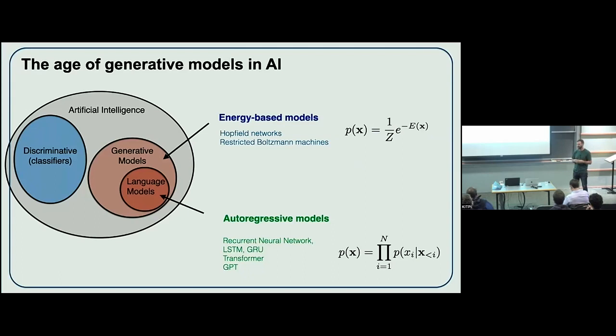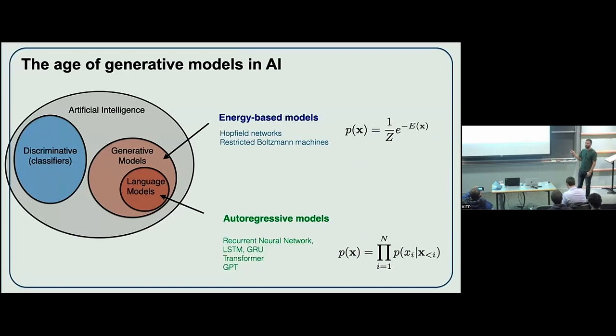Restricted Boltzmann machines, which we used to work on quite a bit, and other related architectures going all the way back to Hopfield networks — John Hopfield, who is a condensed matter theorist — are credited with a lot of the structure behind energy-based models. These models just have an energy function, and all these generative models encode a likelihood or a probability distribution. Energy-based models are typically unnormalized in the sense that you don't know the partition function.